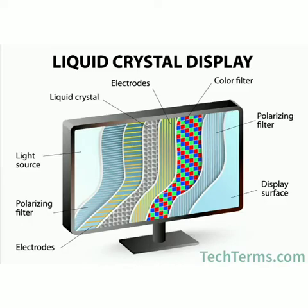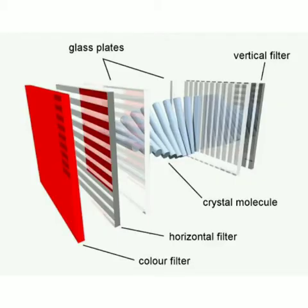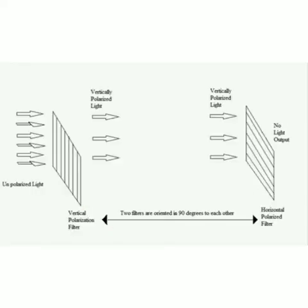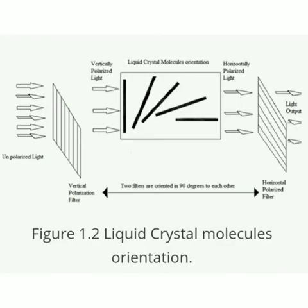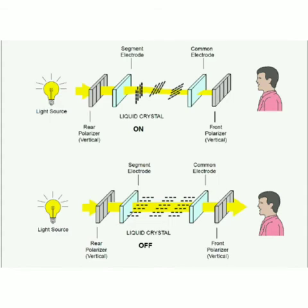Two glass plates, each containing light polarized at right angles to each other, sandwich the liquid crystal material. As we can see in the image, rows of horizontal transparent conductors and columns of vertical conductors are put into the glass plate. Polarized light passing through the material is twisted so that it will pass through the opposite polarizer. The light is then reflected back to the viewer. These compounds have a crystalline arrangement of molecules yet they flow like a liquid.